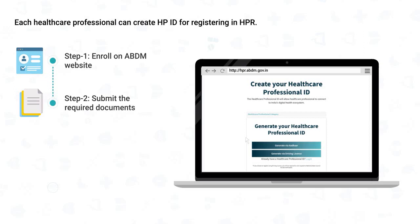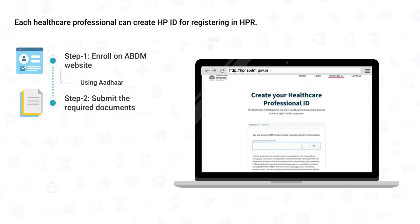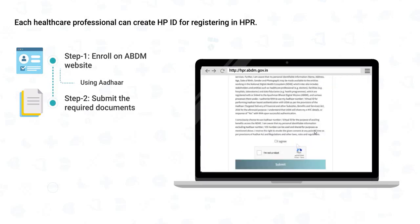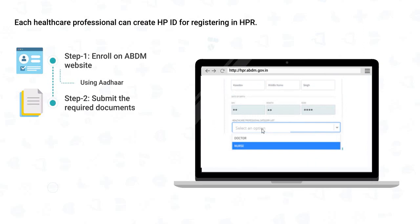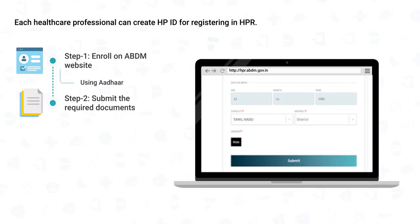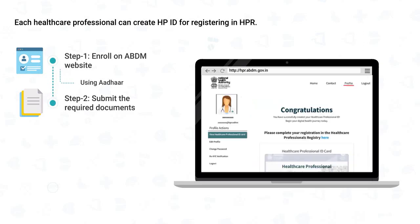To generate HPID via Aadhaar: click the button Generate via Aadhaar, enter the Aadhaar number, accept the terms and conditions, and click Submit. Verify the Aadhaar with OTP. Enter the mobile number and verify it with OTP. After mobile number verification, select the Healthcare Professional category. Choose your HPID name and password and click Submit. The HPID will be successfully generated and can be used to register in HPR.